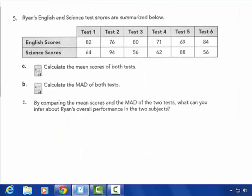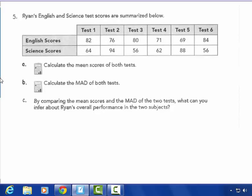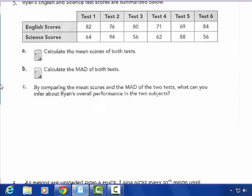Ryan's English and science test scores are summarized below. Calculate the mean scores of both tests. Well, if I add up all of Ryan's English scores, I get a total of 462. So this is English. 462 points divided by those 6 of them and I get a mean of 77. His science scores, I get a total of 420 divided by 6, which is a mean of 70.